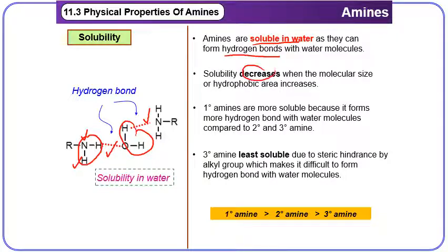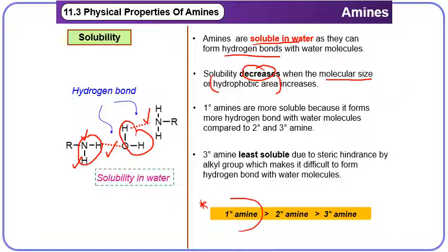However, the solubility of amines decreases as molecular size increases, as mentioned before. We can use the term hydrophobic area. Among primary, secondary, and tertiary amines, primary amine is the most soluble compared to secondary and tertiary because primary amines can form more hydrogen bonds with water due to having more hydrogen atoms.